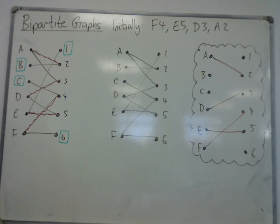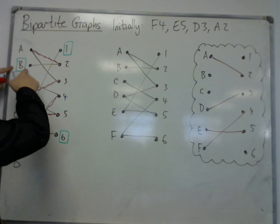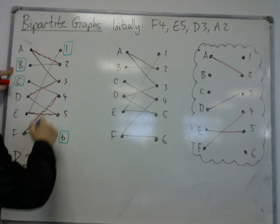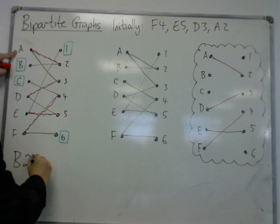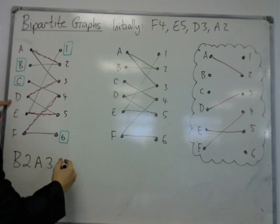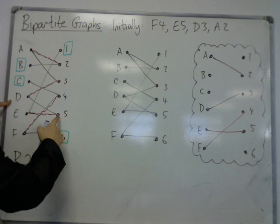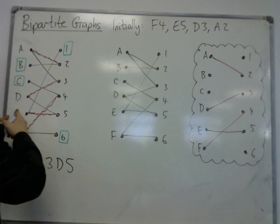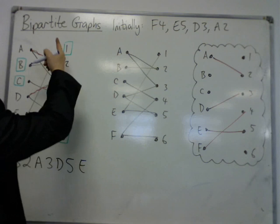Let's try and find a route, an alternating path, that will get me from b to one of the unmatched vertices. I can go from b to 2, then to a, then to 3, then to d, then to 5, then to e, then to 1.